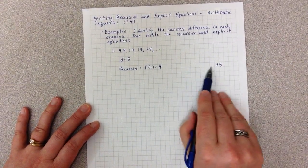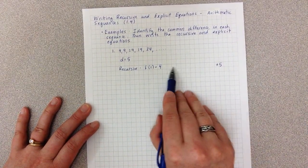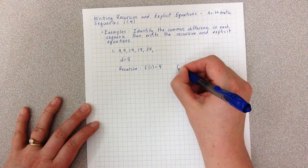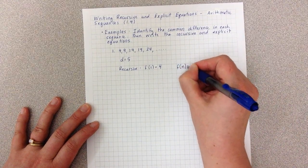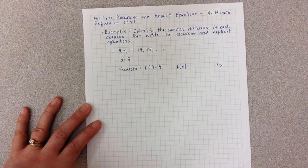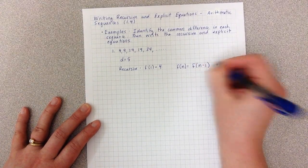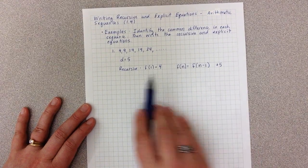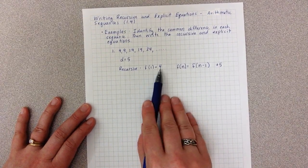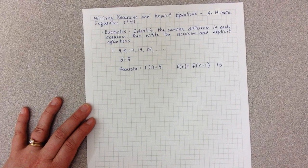This is the place where we have to use that notation where we say our current term F(N) equals our previous term F(N-1) plus five. So we start by saying where we start, F(1) = 4, and what we do each time.